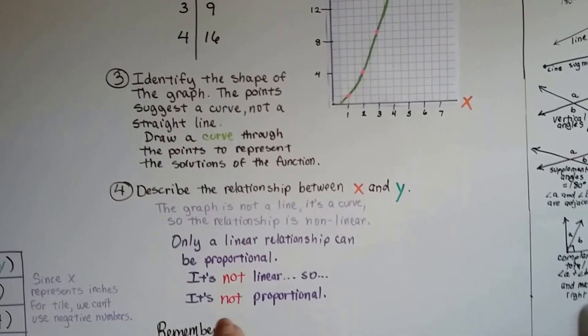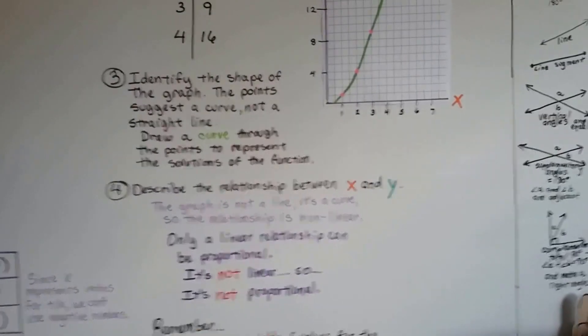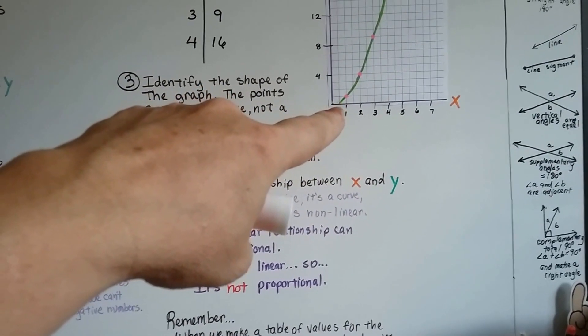Can you remember that? If it's not linear, it's not proportional? So it didn't go through zero, zero, did it? It hit it right before.